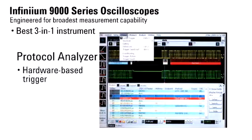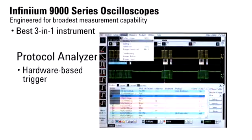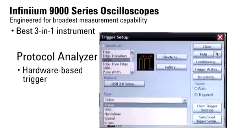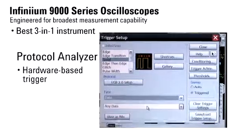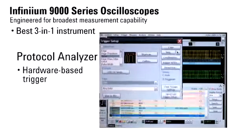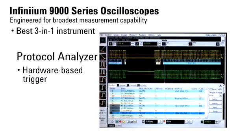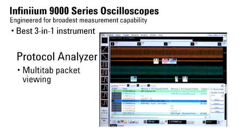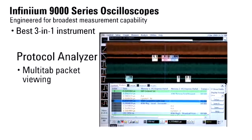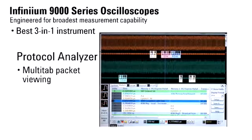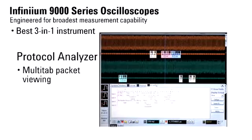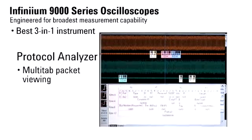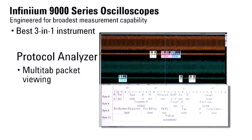Infiniium 9000 series scopes feature hardware-based protocol triggering. You can quickly specify unique packet triggers with intuitive menu selections. In an industry first, these scopes include multi-tab protocol viewing to make it easy to see additional protocol information, such as the content of data packets shown here on a PCI Express bus.